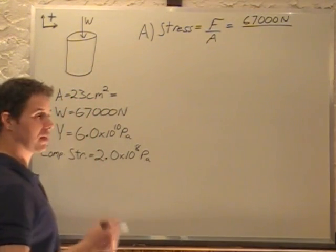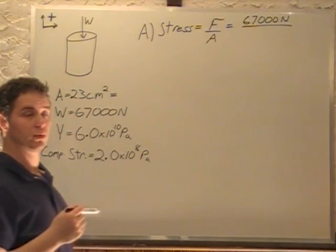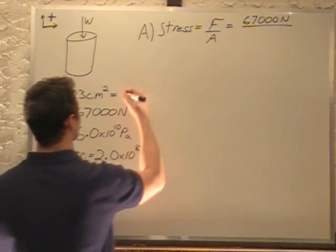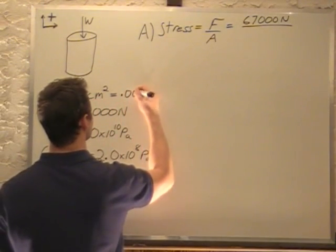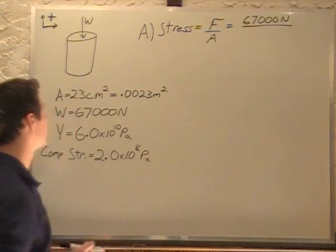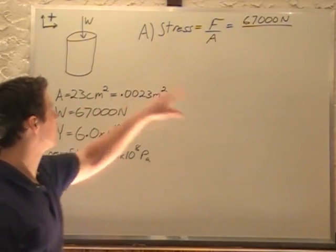Normally for just centimeters to meters we move the decimal place 2. But since it's squared we're going to move it 2 times 2, 4. So we're going to go 1, 2, 3, 4. So it's .0023 meters squared. That's converting from centimeters squared to meters squared. So we plug this number in for the area.